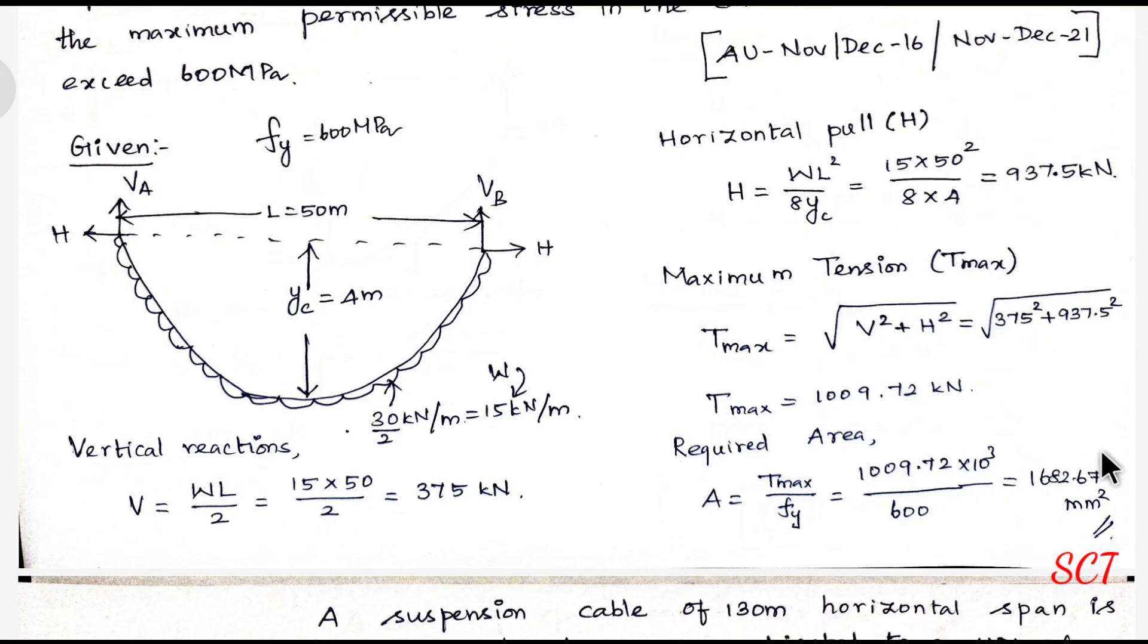Now for the required area, using stress equals load by area, we get A equals T max divided by FI. The maximum tension is 1009.72 kilonewtons, which is 1009.72 times 10 to the power 3 newtons. Dividing by FI value of 600, we get the required area as 1682.67 mm squared.